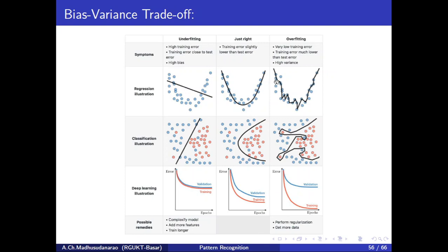When coming to overfitting, the model simply tries to memorize the training data even though it has some noise. So the training error is very, very low compared to underfitting and just-right fit. But when it comes to test error, the test error is much higher compared to training error. This is the problem with overfitting — it is unable to generalize. Good generalization means getting less test error, but in the overfitting case, at test time we get a bit high error. This is simply memorizing the training data.